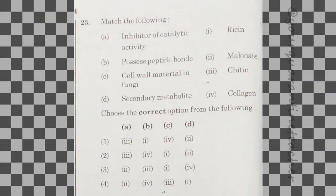23rd question: cell wall material in fungi. After some deliberation, the answer is option 4.